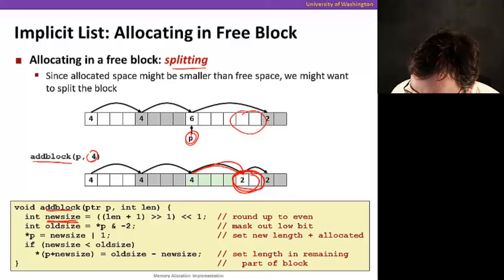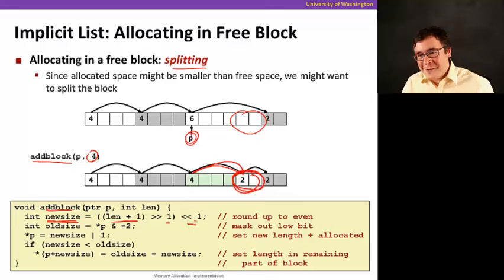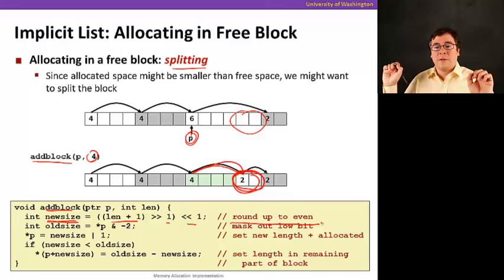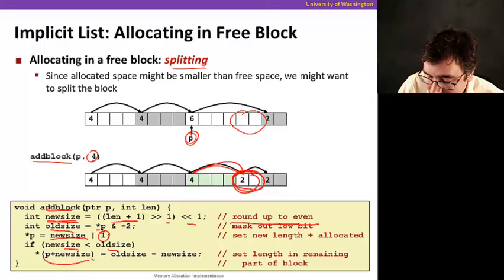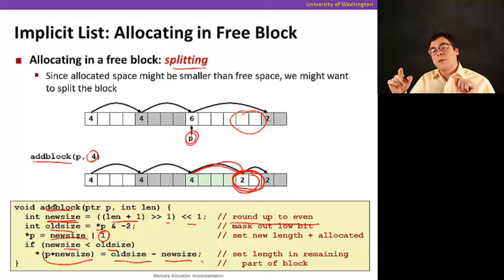Now here's how we're going to implement this function called add block. We're going to say new size equals len plus one, shifted by one, left by one. That's pretty cool. You know what this is doing? Just rounding up to even. It's rounding up to even just because of our alignment requirements. We're going to have an even number of words because of our alignment requirements. Now we're going to keep the old size here, so we're going to mask out the bit and get the size. And now, the new size here, p has a new size ORed with one to mark that it's allocated. But now if the new size is smaller than the old size, what we're going to do is p plus the new size, which points to the next block, is going to be old size minus new size. And we do not set the low bit here because the block is free. Pretty cool, huh?